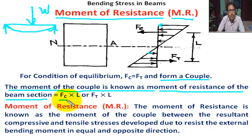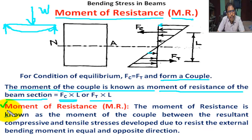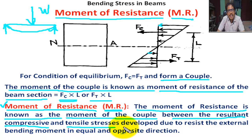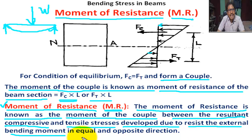The value of the moment of resistance equals the moment of the couple: Fc into L, or Ft into L. The definition of Moment of Resistance (MR) is: the moment of resistance is the moment of the couple between the resultant compressive and tensile stresses developed to resist the external bending moment in equal and opposite directions. Thank you.